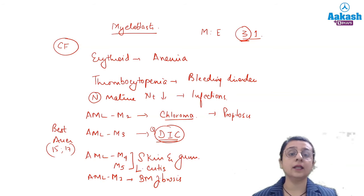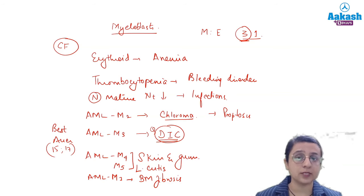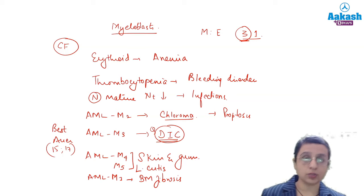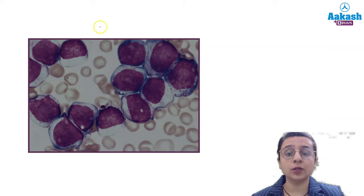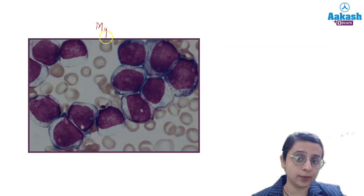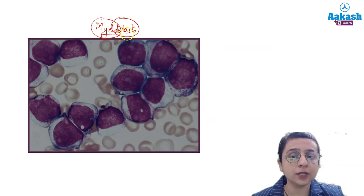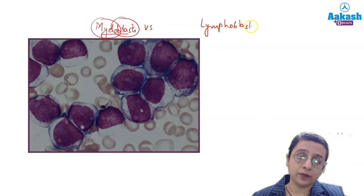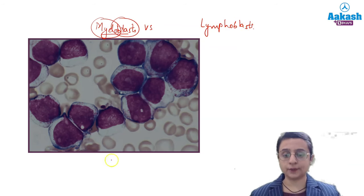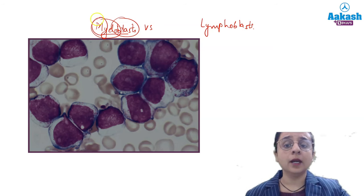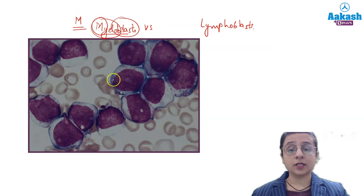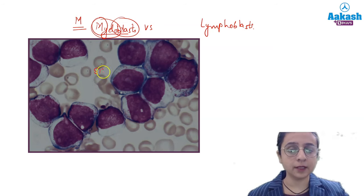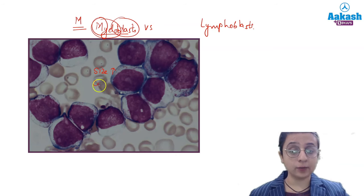The blast count is more than 20% according to WHO and more than 30% according to FAB. It is very important to identify myeloblasts on morphology — blasts are bigger and myeloblasts differ from lymphoblasts. In myeloblasts, M means everything is more: size is bigger, cytoplasm is more abundant, you can clearly see the cytoplasm.